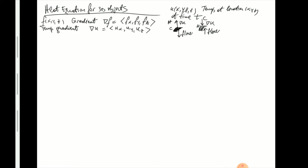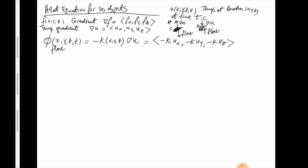When we write the Fourier law of heat conduction in 3D, the heat flow is now a vector. The heat flow vector is minus k(x, y, z) times the gradient of u — as a vector: minus k times u partial x, minus k times u partial y, minus k times u partial z. In the one-dimensional case this reduces to just phi(x, t) = minus k(x) times u partial x, which is just the first component of the three-dimensional version.